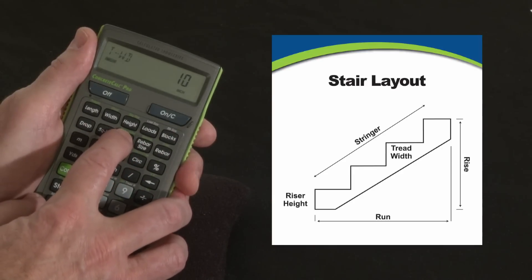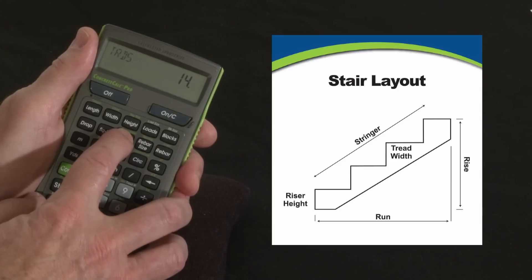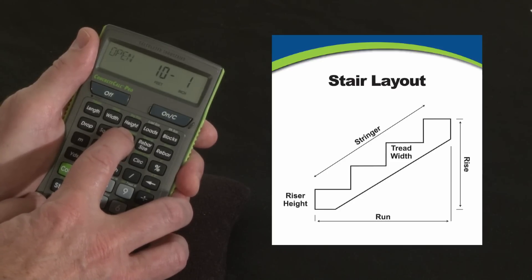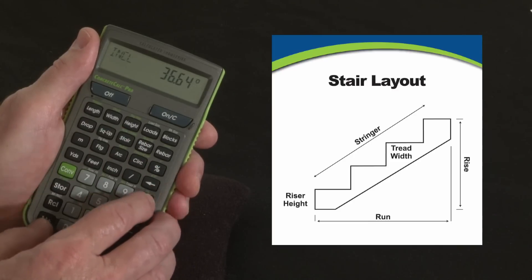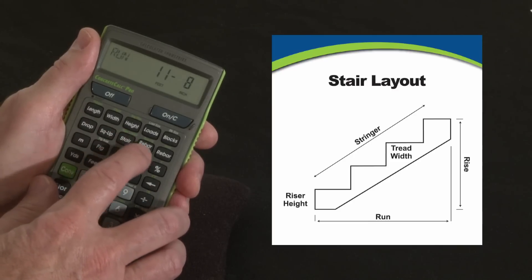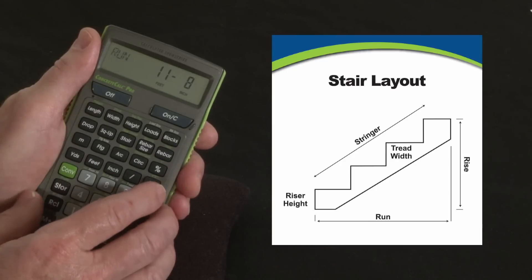The tread width defaults to ten inches wide. There's fourteen treads. There's no adjustment or remainder on that one. The stairwell opening is ten feet one inch of headroom and the stringer length is fourteen foot six and one half inches. And the angle of incline is thirty six point six four degrees. And finally the total run of the stairway is eleven foot eight inches which is great.